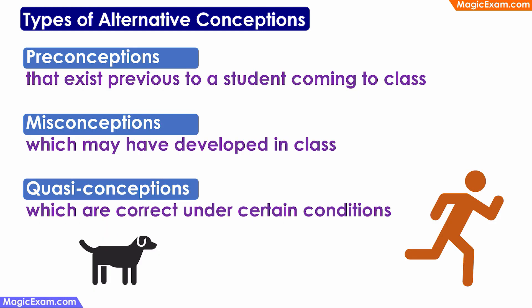Let us talk about the different types of alternative conceptions. First, there can be preconceptions, which exist before a student comes to class — learned from parents, family, or the community the child comes from. Then there can be misconceptions, which may have developed in class because of some misunderstanding or confusion with the lesson, or through the teacher or peers in school.